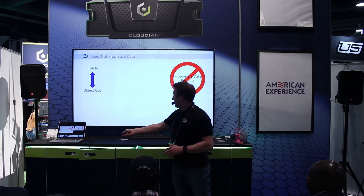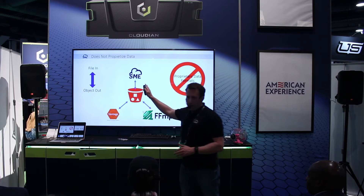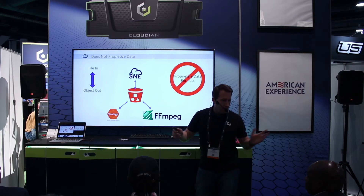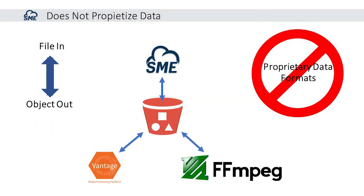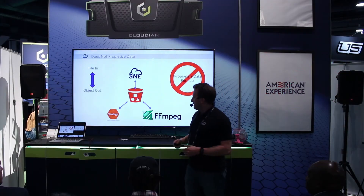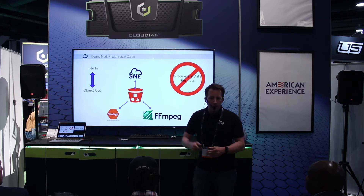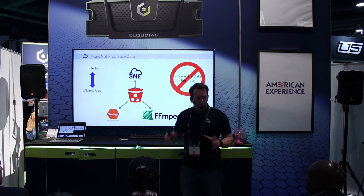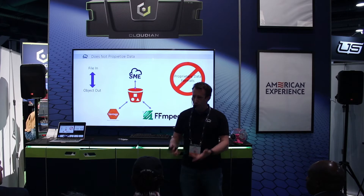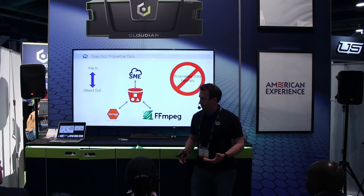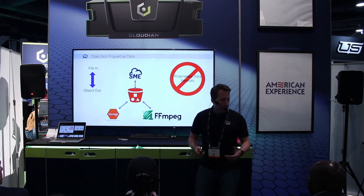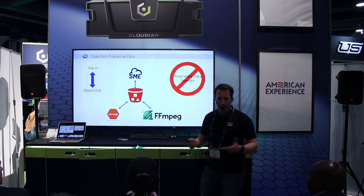Let's look at a quick example. You're using SME and pulling in data — maybe a partner has put some sports media footage up on S3. You're pulling it into a bucket locally, and in that bucket you want to transcode it. Other systems such as Vantage, Elemental, or FFmpeg are going to be able to recognize that, work completely native with the S3 protocol, transcode it, and then move it to wherever it needs to go.